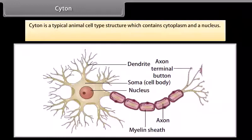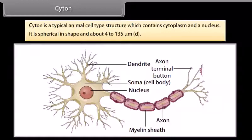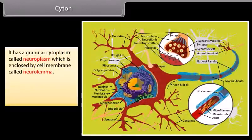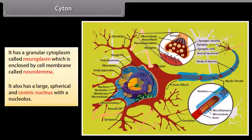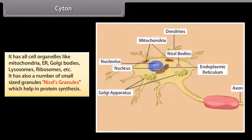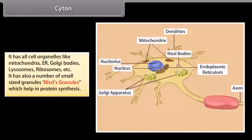Cytone is a typical animal cell-type structure which contains cytoplasm and a nucleus. It is spherical in shape and about 4 to 135 micrometers. It has a granular cytoplasm called neuroplasm, enclosed by a cell membrane called neurolemma. It also has a large spherical and centric nucleus. It has all cell organelles like mitochondria, ER, Golgi bodies, lysosomes, ribosomes, etc. It also has a number of small-sized granules called Nissl's granules, which help in protein synthesis.